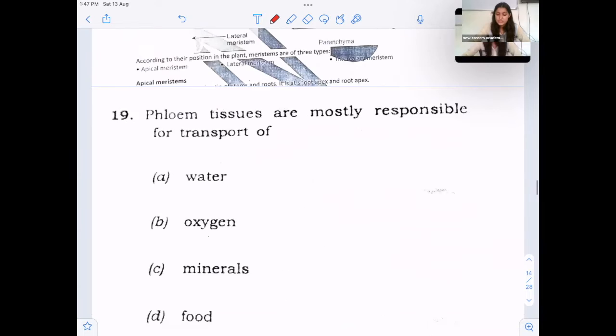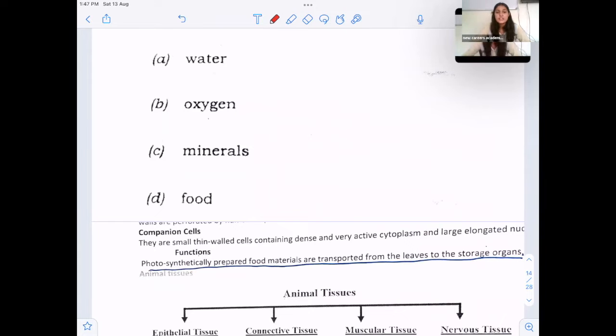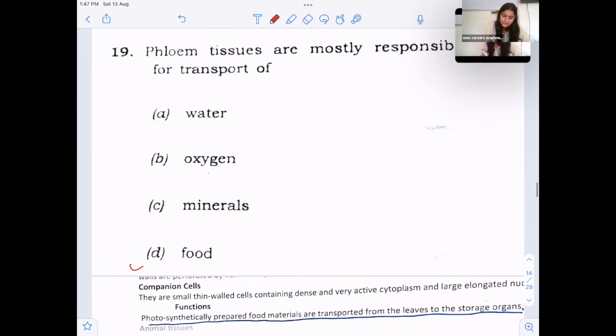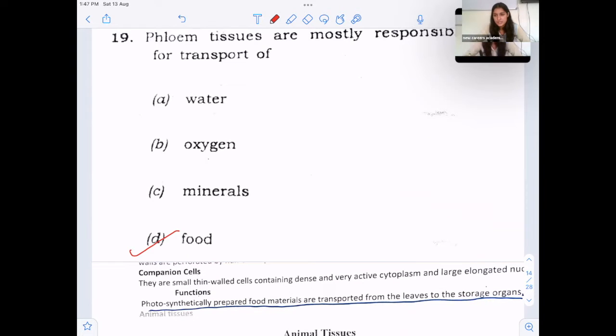Next question, phloem tissues are mostly responsible for the transport of, this is very simple question, phloem is responsible for transport of food material. So option D is correct. Water and minerals, they are transported by xylem in plants.